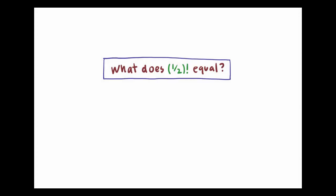This question, what does one-half factorial equal, might sound like nonsense to anyone who knows, for example, that four factorial equals the product of the whole numbers one through four. There are no whole numbers between one-half and one, so what would we multiply together to get one-half factorial?